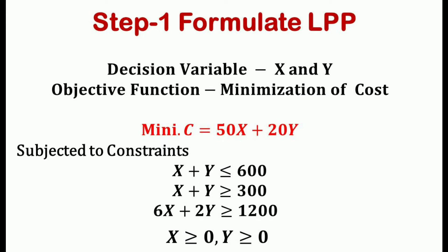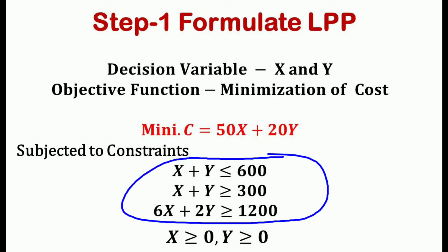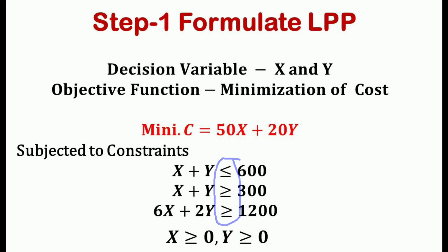The first step to solve the linear programming problem is to formulate it. We have two decision variables x and y, so we can solve this graphically. The objective function is: minimize C = 50x + 20y, subjected to x + y ≤ 600, x + y ≥ 300, and 6x + 2y ≥ 1200. Two constraints are greater-than-or-equal-to type and one is less-than-or-equal-to type — hence the mixed constraints. Non-negativity: x ≥ 0, y ≥ 0.